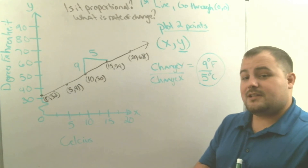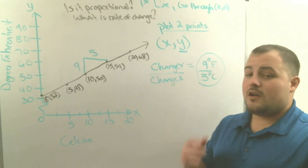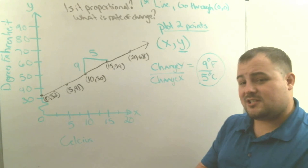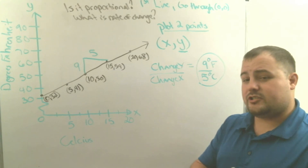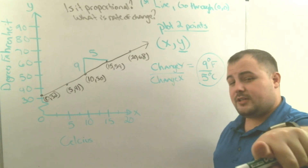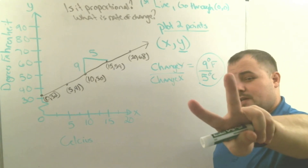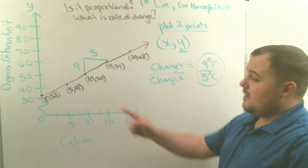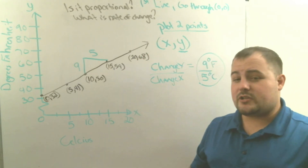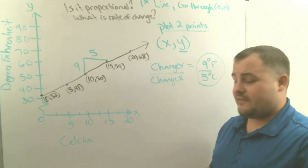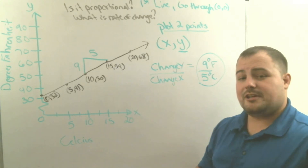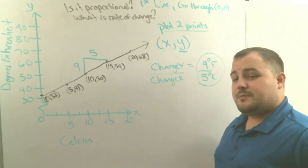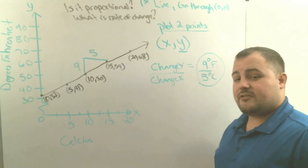That's it for this lesson. We'll cover more in class and practice finding rate of change. Reminder: proportional relationships go through the origin and make a straight line. A constant rate of change will always make a straight line when graphed; without a constant rate of change, it won't make a straight line. See you tomorrow — have a great day!